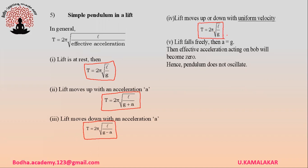Suppose the lift falls freely, then a = g. In such a case, the effective acceleration acting on the bob becomes zero. Hence, the pendulum does not oscillate.